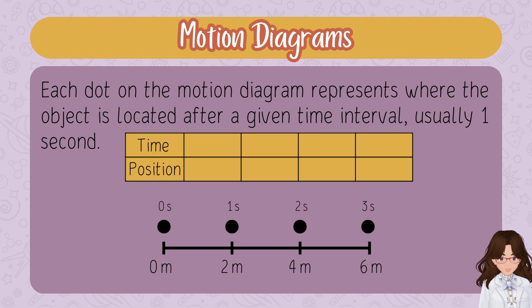Speaking of the time interval, usually it's one second per dot. However, you would use something else if specified in the problem. In this diagram, we can see zero seconds, one second, two seconds, three seconds. This is a one second interval, which is pretty standard.